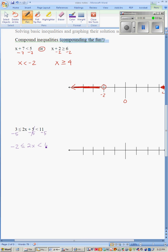Now we're going to divide everyone by positive 2. So don't worry about flipping anything. And we're going to get negative 1, x, and 3.